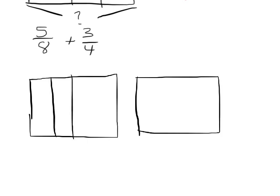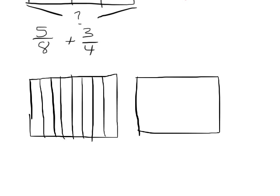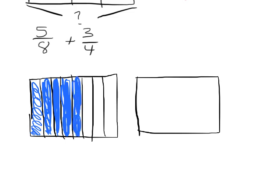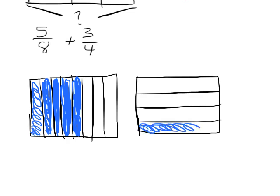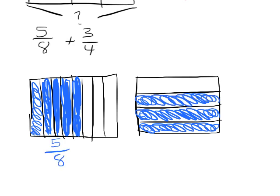I'll cut the first box into eighths — starting by cutting into fourths, then each fourth into halves — and shade in five of those eighths: one, two, three, four, five. Then I'll cut the second box into fourths and shade in three of them. So here we have five-eighths and here we have three-fourths. In Engage New York we're not finding the least common denominator; we're using the cutting method.